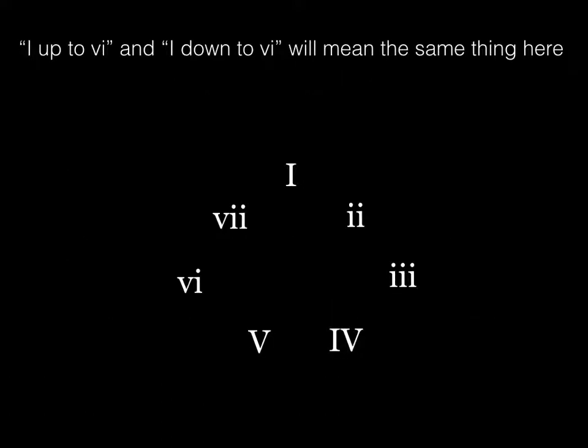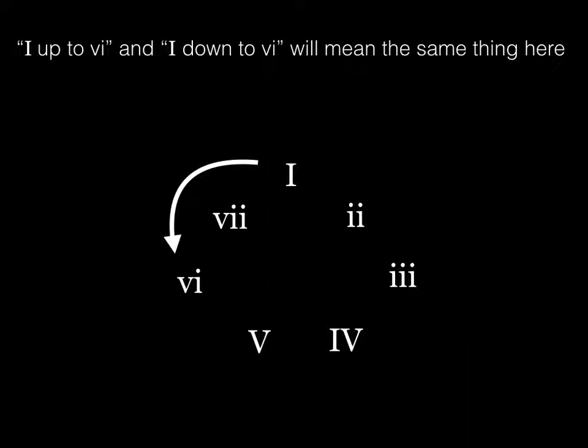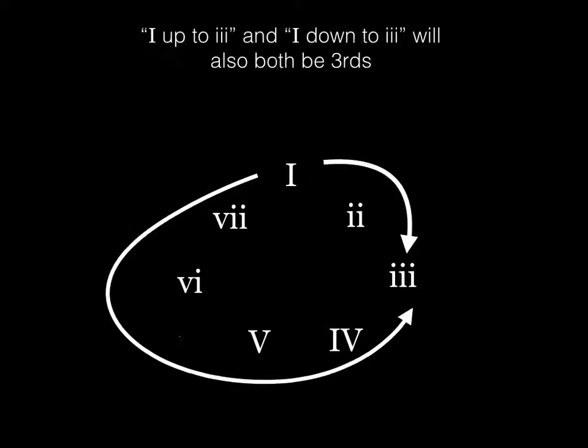Let me show you how this works. If we talk about one going up to six or one going down to six, this means the same thing. One moving to six is a descending third. One up to six would be an ascending sixth, but we talk about both as thirds. Similarly, one up to three is an ascending third, but one down to three would be a descending sixth. We talk about both as thirds.